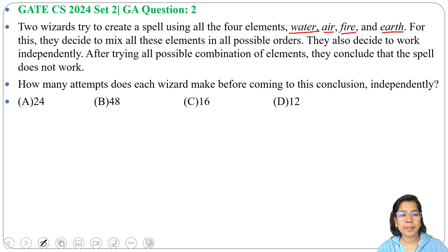They try to combine all and conclude that the spell doesn't work. For the conclusion that the spell doesn't work, they need to check all possibilities, meaning they need to check all possible combinations. For that, there are four elements: water, air,